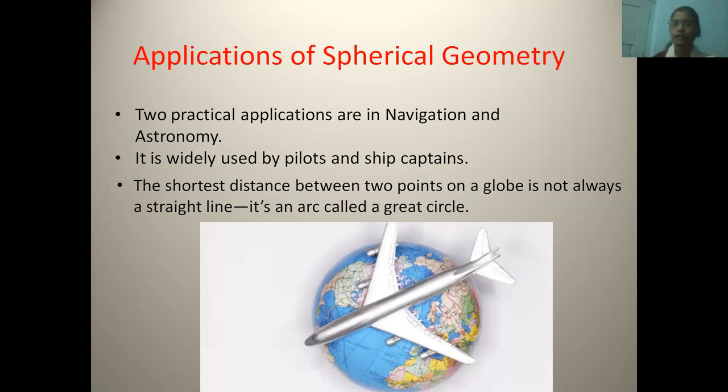It is an arc called a great circle. If we see in practical life, then we say that the shortest distance between two points is always a straight line. But in space, 3D space, it becomes wrong. And it is a curve, which is an arc of the great circle.